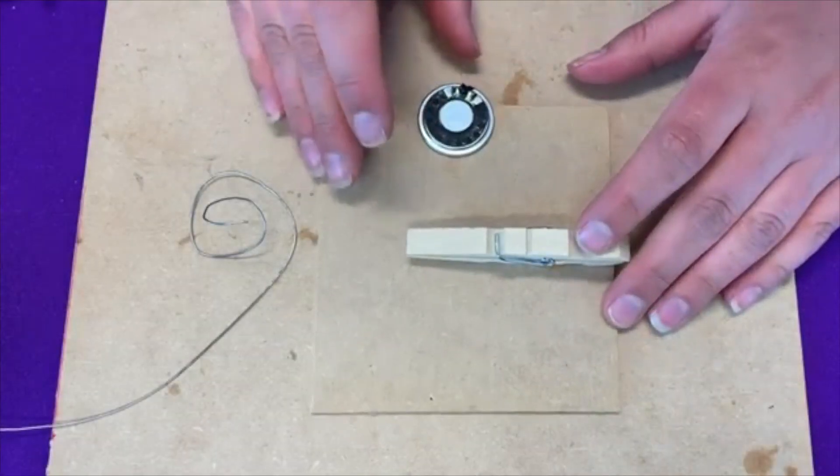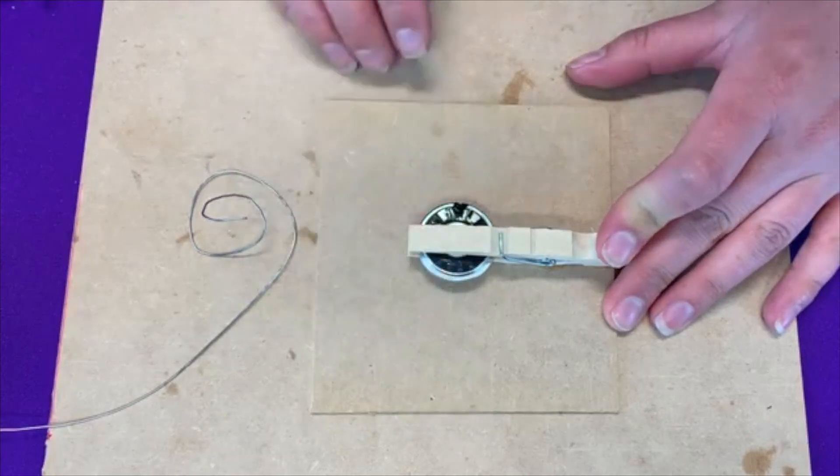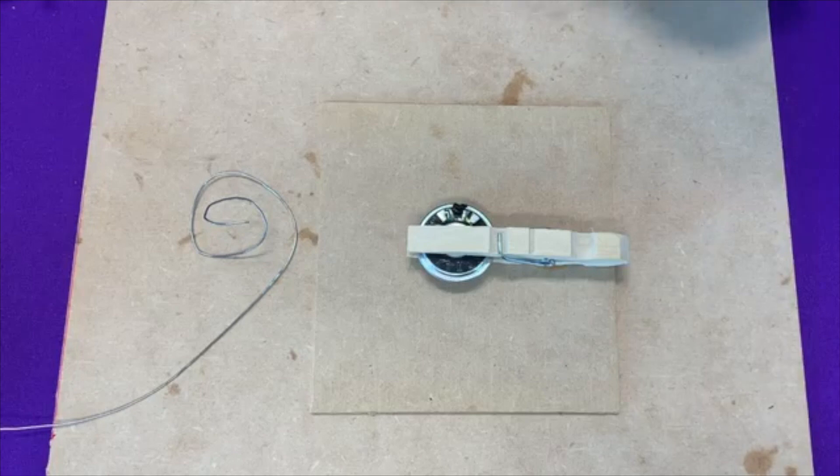So to solder a wire to our speakers, we can use the same process. When I put the speaker in the clothespin, I'm going to make sure to put it all the way in there so that there's no pressure on the cone of the speaker. It's all on the frame.